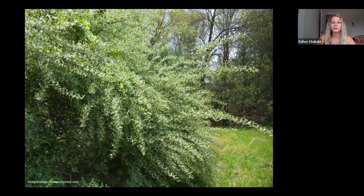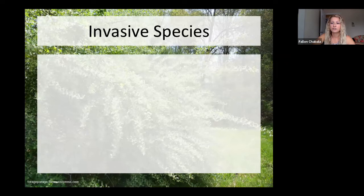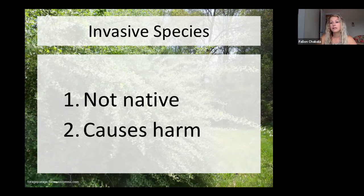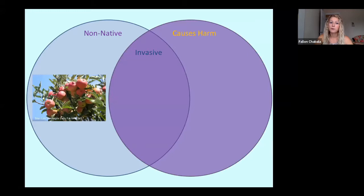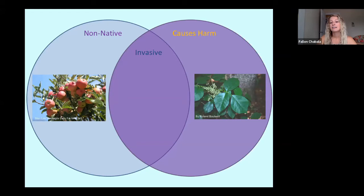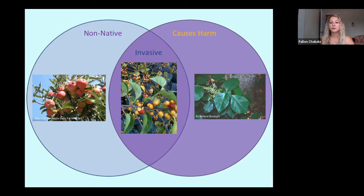This is autumn olive, another super common one throughout all of Michigan. An invasive species is a two-part definition: it has to be both non-native and cause harm, either to the environment, economy, or human health, and sometimes a combination of all three. For example, many of our apple trees aren't native to Michigan, but we like them and they don't cause harm — they are not invasive. On the other hand, poison ivy causes harm to us, but it is a native species, so it is not considered invasive. And then oriental bittersweet both causes harm to our native species and is not from Michigan, so it's invasive.